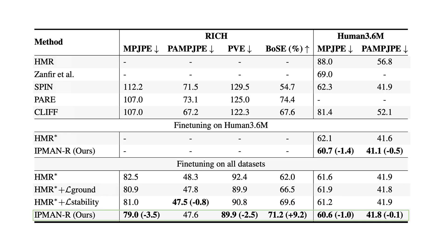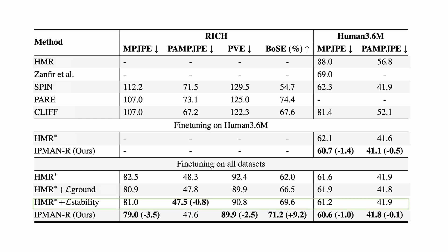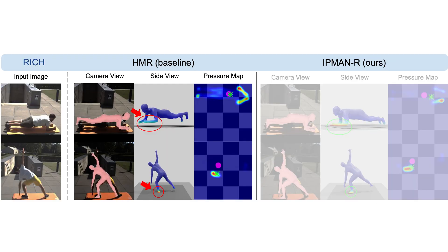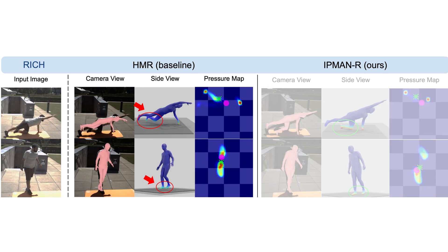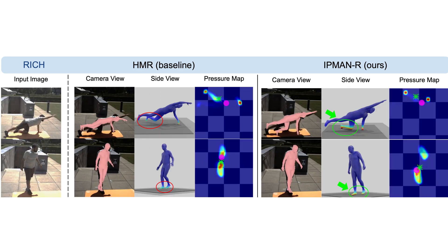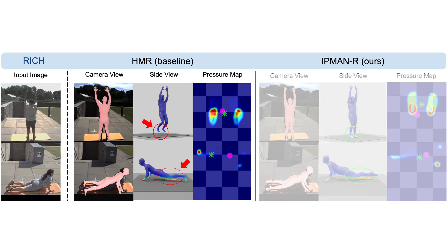We show that IPMAN-R improves upon the baseline on both standard and new benchmarks. Both intuitive physics terms contribute to the improvement, and using both together shows the largest improvement. Qualitatively, IPMAN-R encourages stable poses, promotes realistic floor support, and reduces body-floor penetrations compared to HMR.